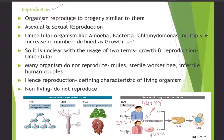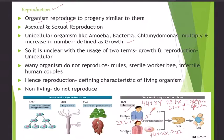During fertilization, meiosis produces gametes: from 44 autosomes, 22 chromosomes go to each gamete. A male can produce two types of sperms — one carrying X and one carrying Y chromosomes. In the mother, when meiosis takes place, each ovum gets 22 autosomes plus X. So females produce only one type of ovum: 22 + X.